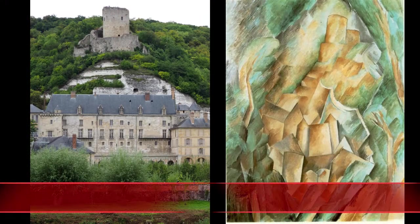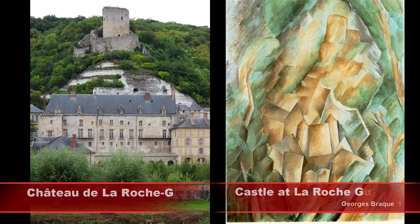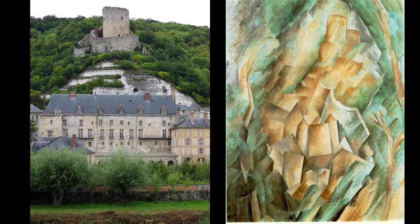Here we are going to look at an example of the painting Castle at La Roche-Grillon, painted by Georges Braque. You have here a side-by-side comparison of Braque's painting and a photo of the same castle. You can see how they have similar shapes, like the towers at the top of the hill, and some of the roof lines and chimneys. You can see how Braque simplified most of the details down to their most characteristic parts that make the castle identifiable.